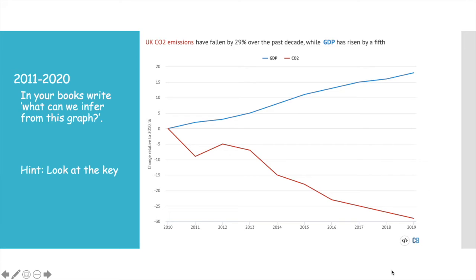So 2010 was a high point — our CO2 emissions were extremely high and it was something we needed to act on. Since 2010, you can see in the red line there was quite a sharp decrease in carbon dioxide emissions. Between 2010 and 2019, the UK CO2 emissions fell by 29% over the last decade — that's fantastic news. In the blue line, you can also see the wealth of the country has gone up. So you could say there's a correlation: as the country gets richer, the carbon dioxide production goes down.